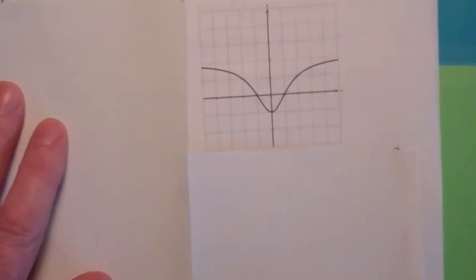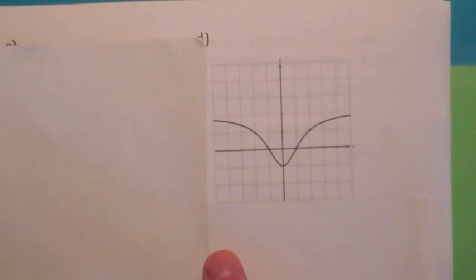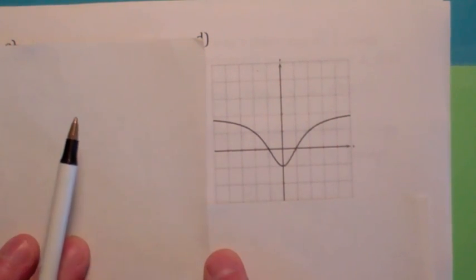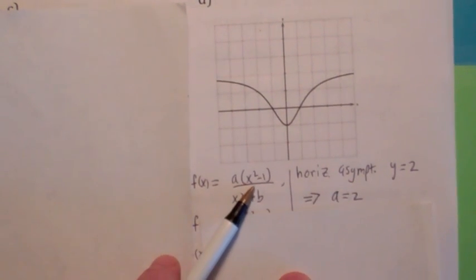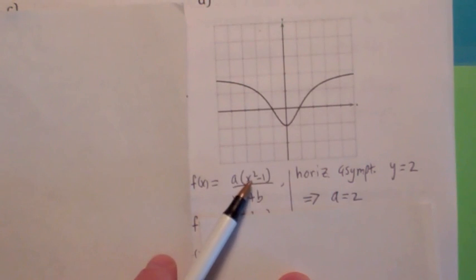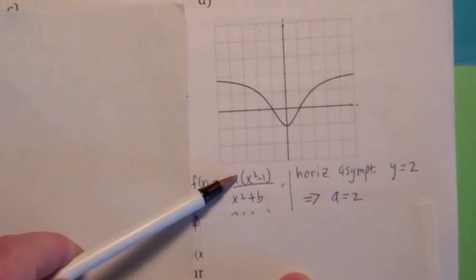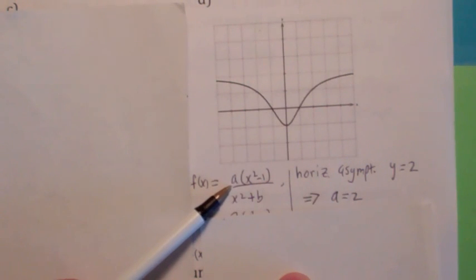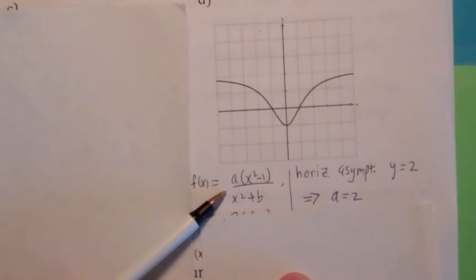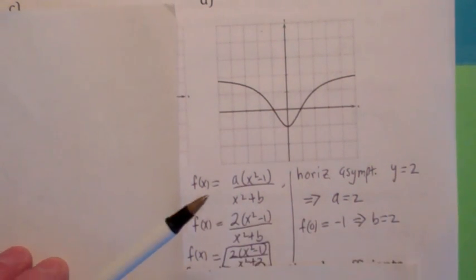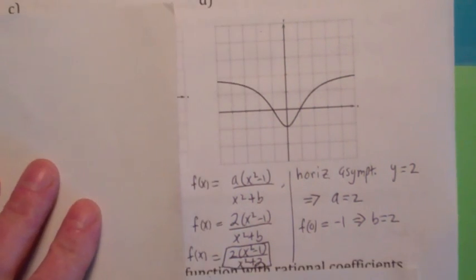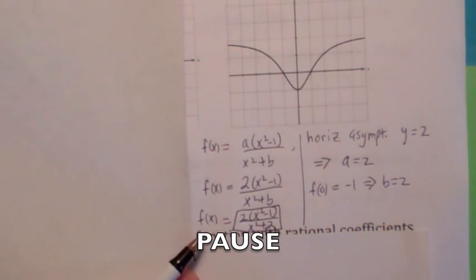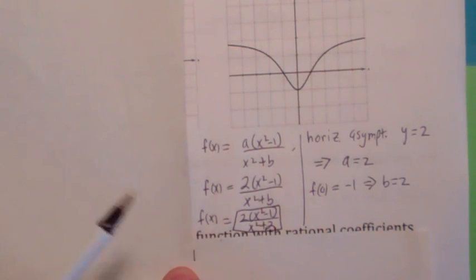This one's kind of hard. This is a rational function, but notice there's no vertical asymptotes, yet you have a horizontal asymptote at 2. Well, it's going to have x-intercepts at 1 and negative 1, so x plus 1 times x minus 1, meaning x squared minus 1 on the top. You have to have the same degree on top and bottom, so x squared on the bottom, but you can't have a vertical asymptote — so call it x squared plus some positive number b. Since the horizontal asymptote is 2, a has to equal 2. To find b, pick the point 0, negative 1: plug in 0 for x and negative 1 for y, solve for b, and you get b equals 2. So f of x equals 2 times the quantity x squared minus 1 over x squared plus 2.